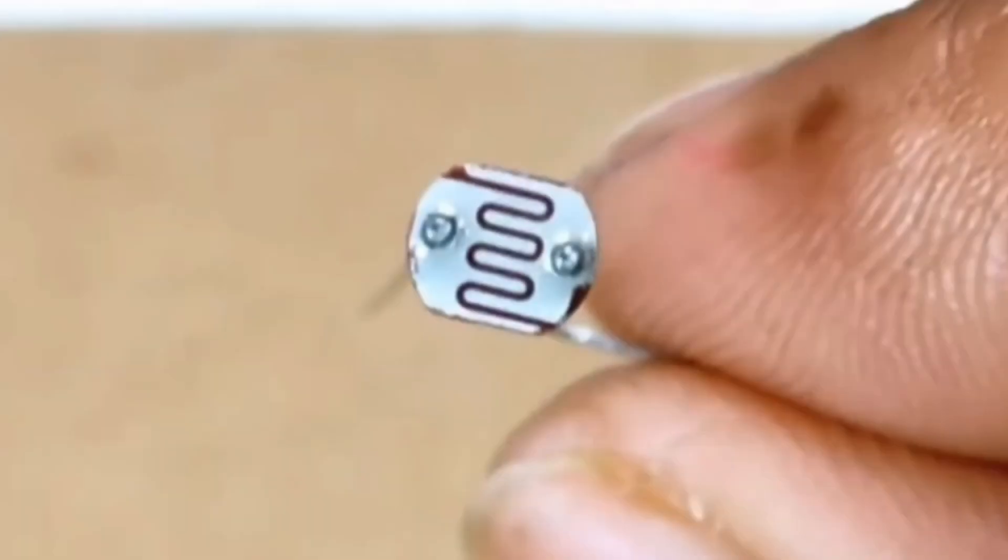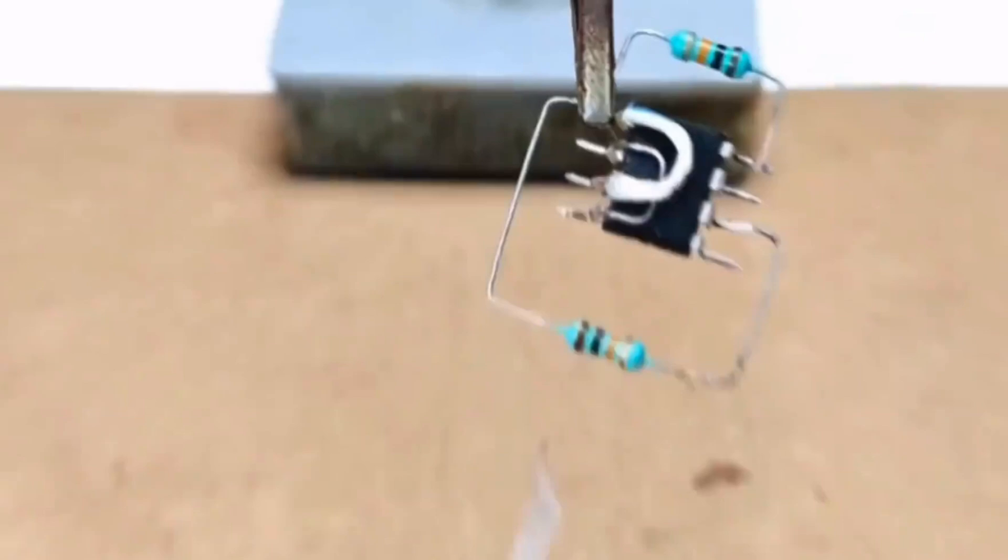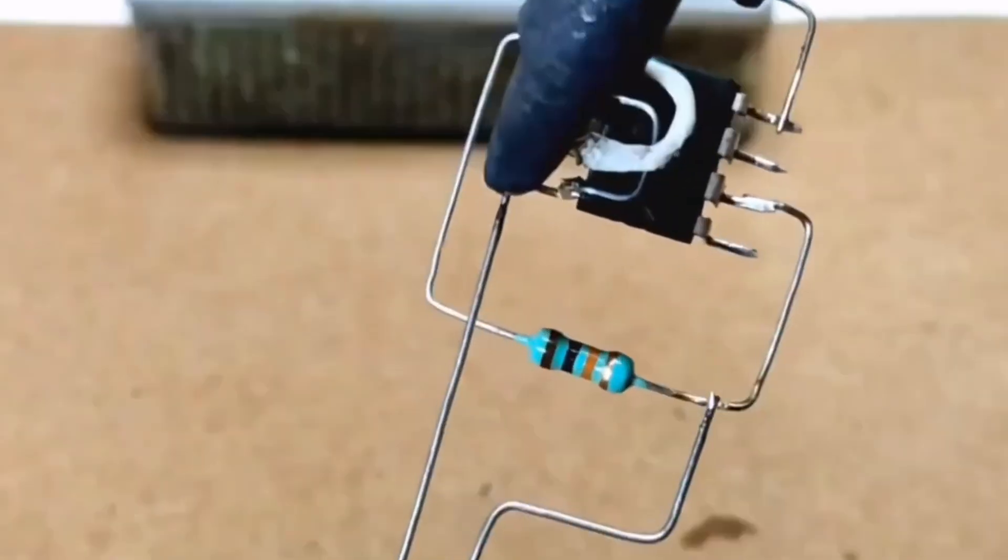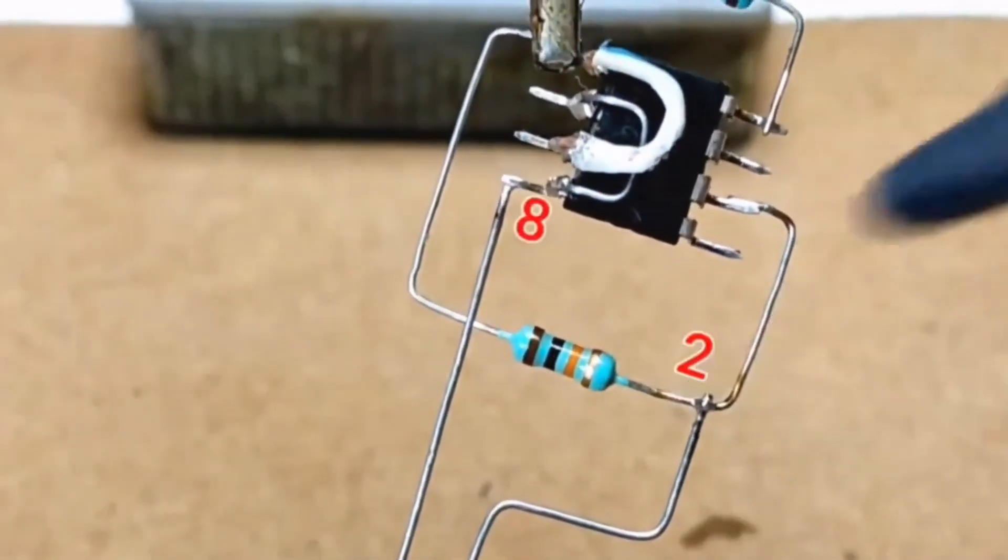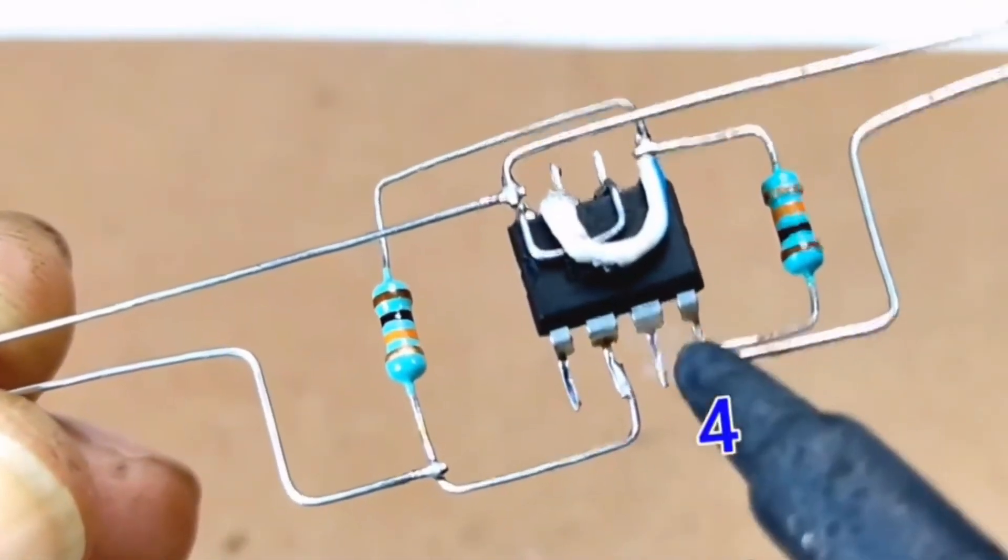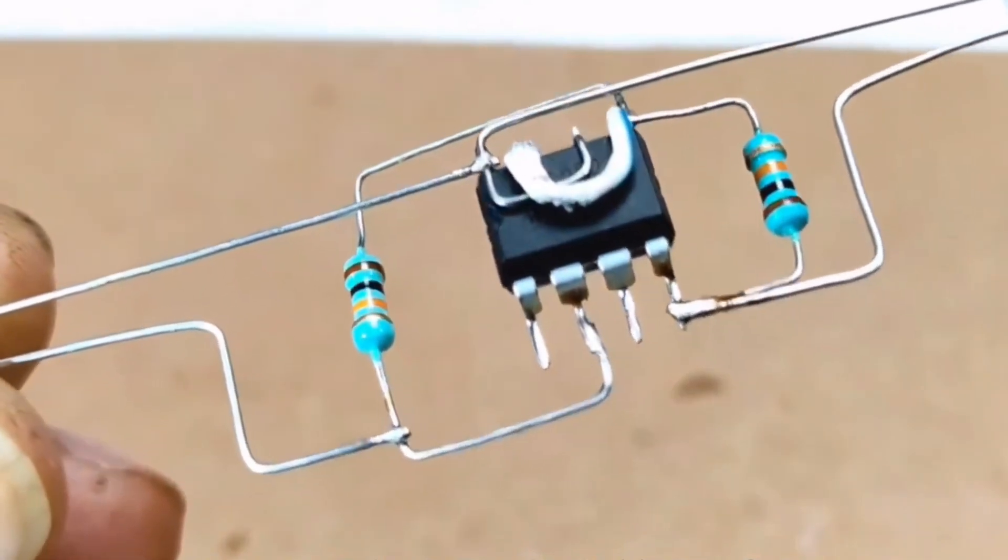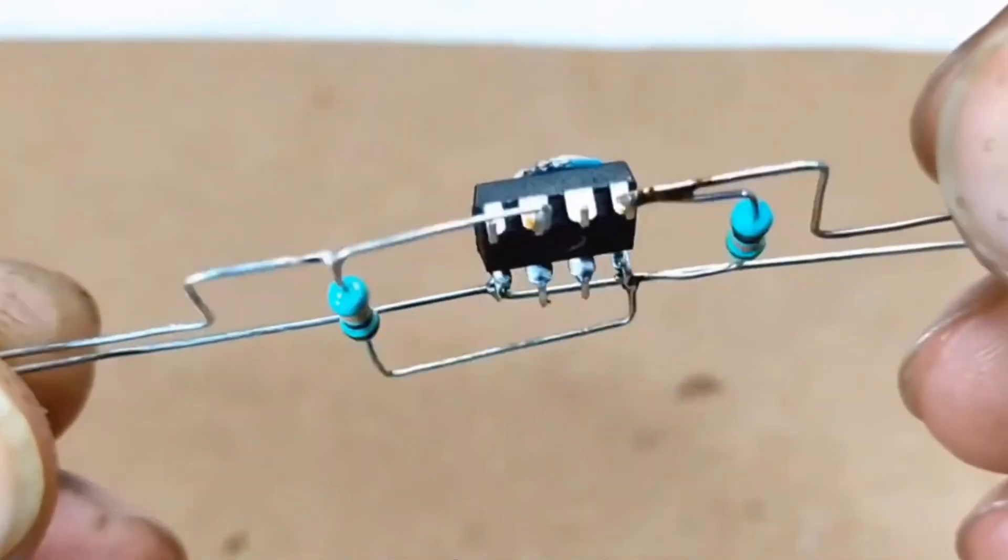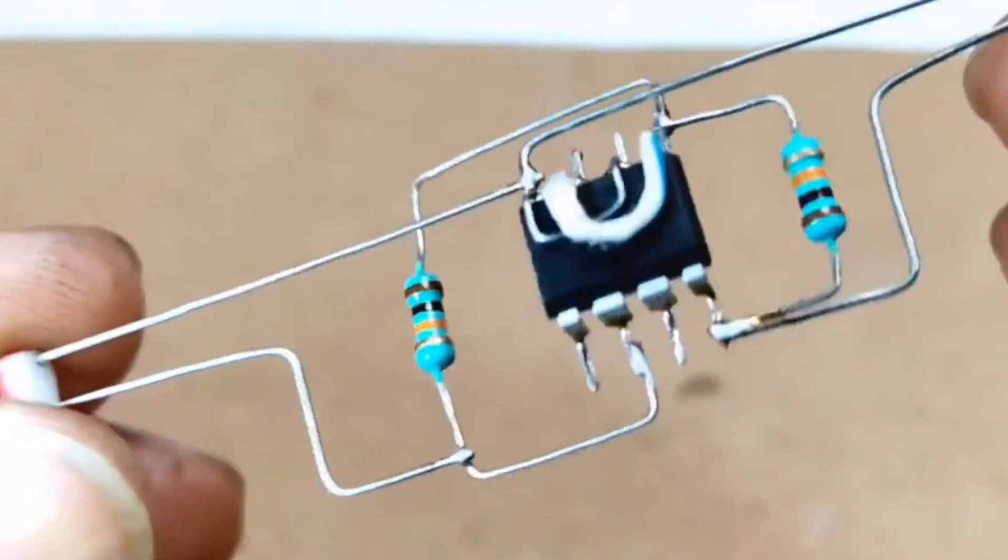Now we introduce two photoresistors, which serve as the upper and lower voltage divider resistors for pin 8. Unlike the fixed resistors, these photoresistors adjust their resistance based on light intensity. This allows the circuit to respond dynamically to changes in light levels.